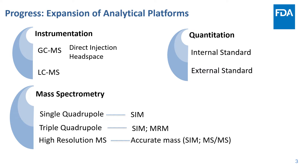With the expansion of nitrosamine analytes, the analytical platforms required for their analysis are greatly evolving and expanding. With respect to instrumentation, GC-MS, which has been the primary technique for simple nitrosamine analysis, was initially the main platform for the analysis of NDMA, NDEA, and other simple nitrosamines.